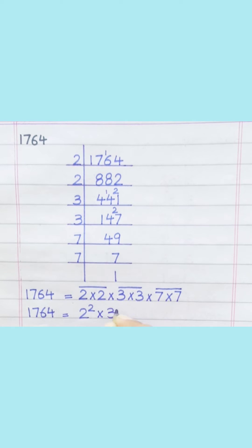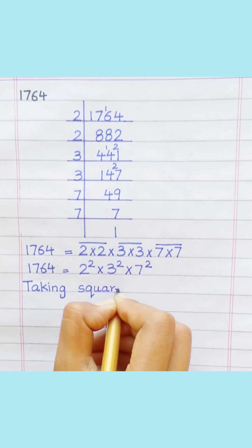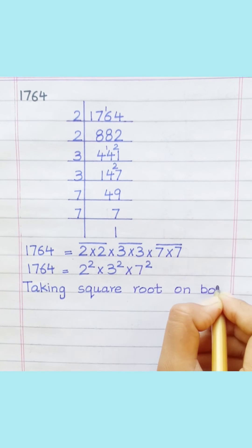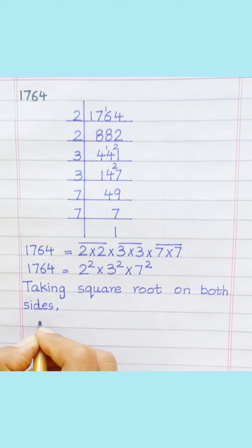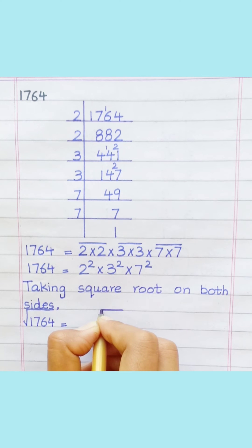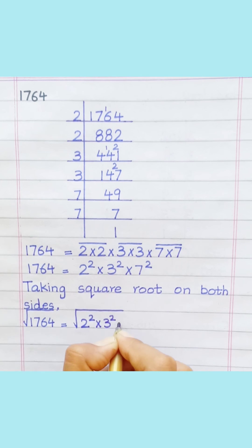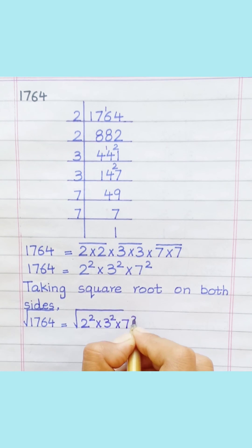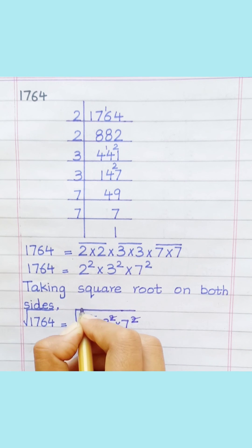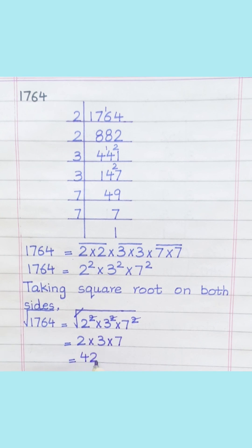2 2's are 2. 3 2's are 3. 3 3's are 4. 2 3's are 4. 4 3's are 4.